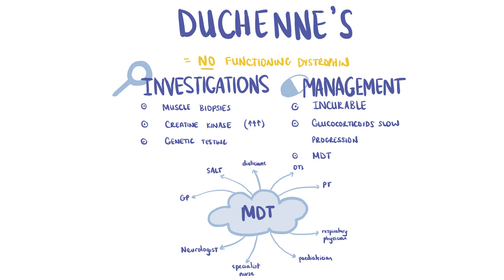Glucocorticoids can slow the progression of the disease; however, Duchenne's is sadly incurable. Physiotherapy and occupational therapy can help with symptomatic management. Genetic counselling is essential, so parents are able to make informed decisions about their future childbearing if applicable. DMD is associated with later complications, such as arrhythmias, scoliosis, dilated cardiomyopathy, and respiratory failure.